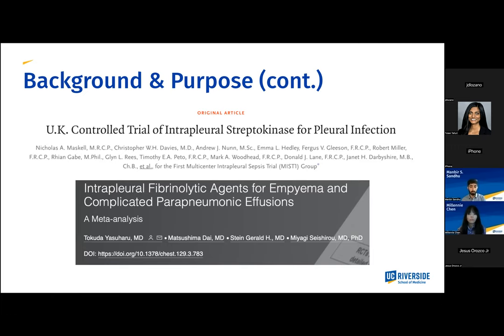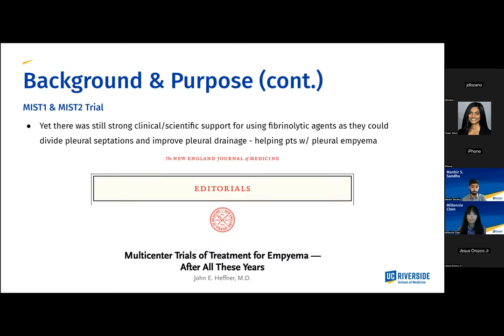However, there was still strong clinical and scientific support for the hypothesis that division of pleural septations with the use of fibrolytic agents would result in improved pleural drainage. This came with an editorial in the New England Journal of Medicine in 2006 that specifically rejected the notion that we should avoid intrapleural use of fibrolytic therapy. It brought up shortcomings of the MIST-1 trial, such as the study's broad inclusion criteria, lack of proper imaging, advanced age of many patients, comorbidities of patients enrolled in the trial, and lack of specific standardized protocols.